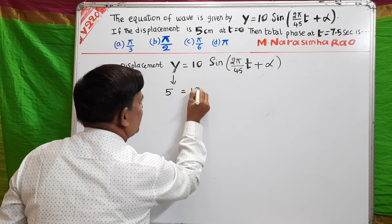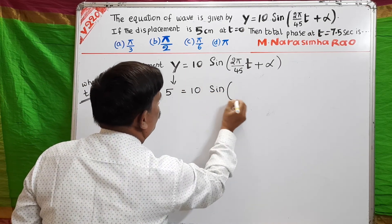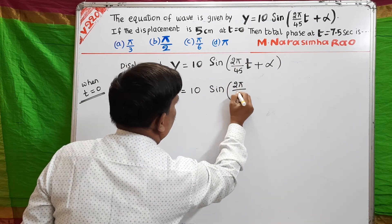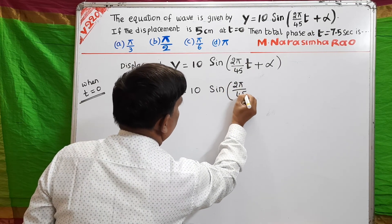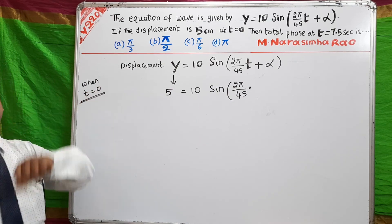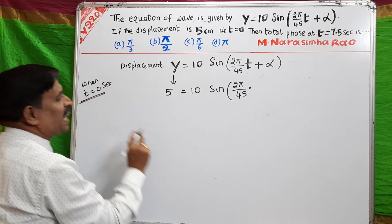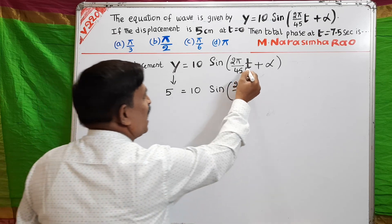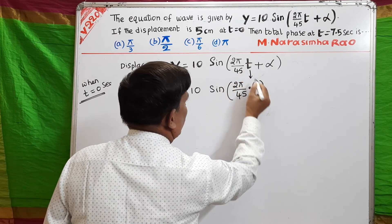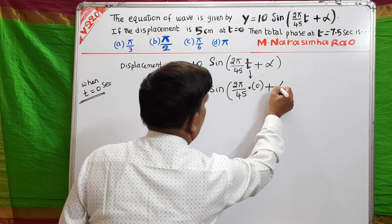Writing the equation: 10 sine of (2π/45 · t + α). They told time is 0 seconds, so substituting t = 0: 5 = 10 · sin(2π/45 · 0 + α).